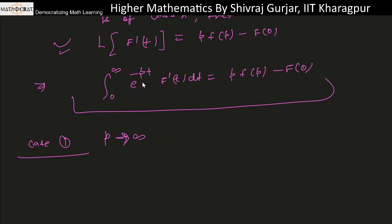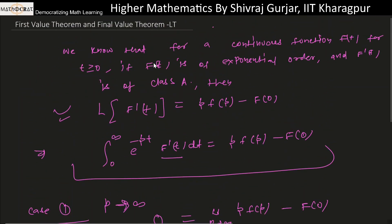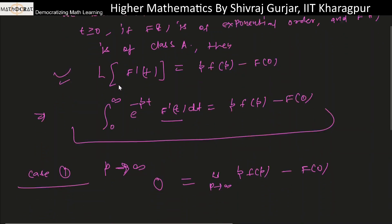Because t belongs to the positive real system, this will be bounded, so we get zero equals limit as p tends to infinity of p·F(p) minus f(0). Since f(0) is a constant, the limit as p tends to infinity won't affect it. By continuity of function f(t), the limit as t tends to zero of f(t) equals f(0).